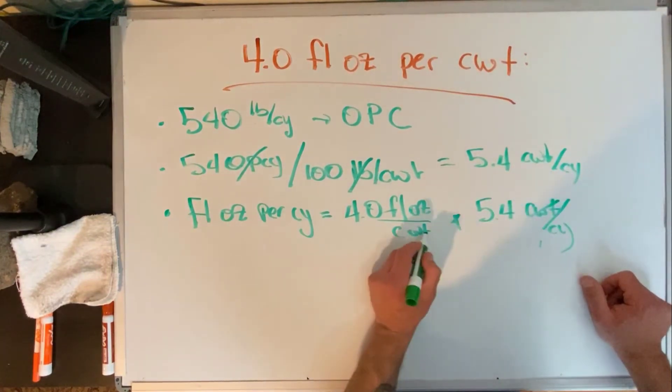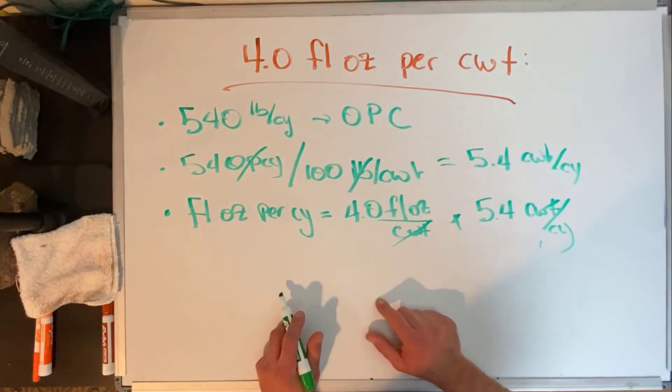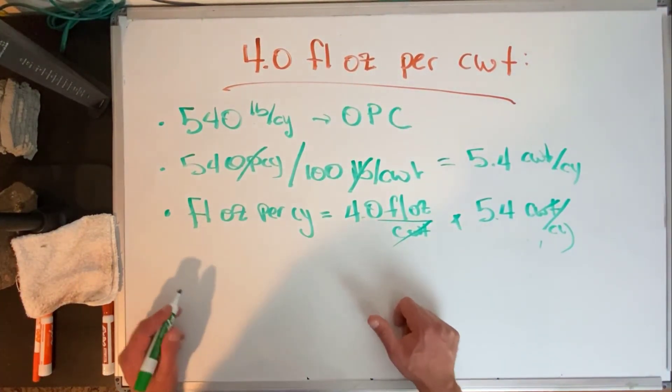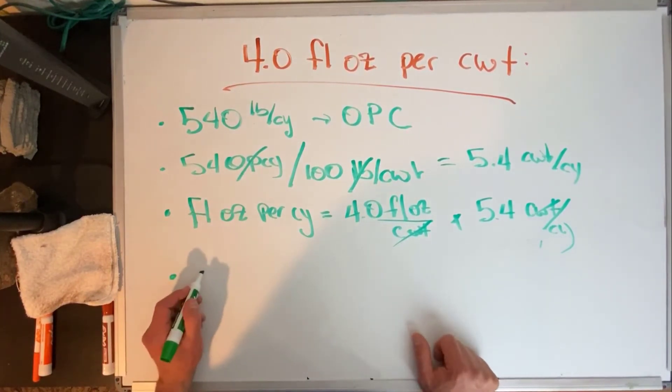We do 4.0 times 5.4 and I'm going to guess that's 21.6. So we have got a final dosage of 21.6 fluid ounces per cubic yard.